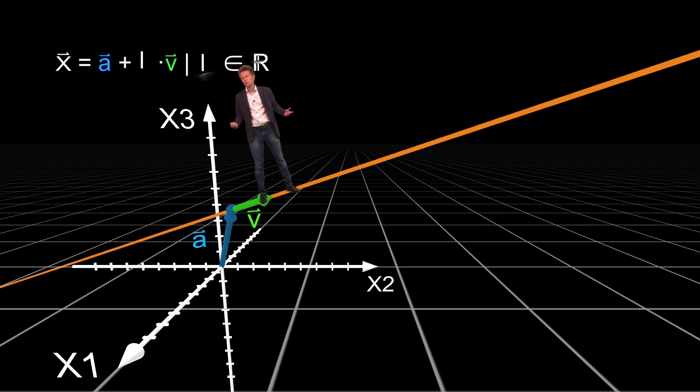Instead of k I can use any letter such as l or r. Very commonly Greek letters are used like lambda or mu. So please don't get confused if this parameter is not called k or lambda. We now have an equation that we can use to pinpoint every point on our straight line in space.